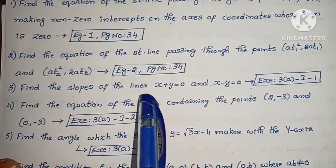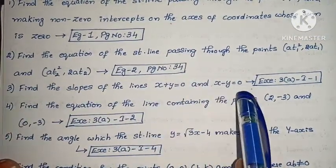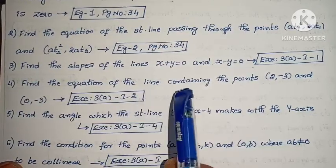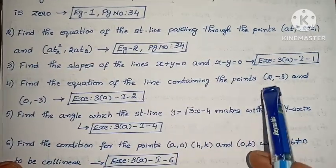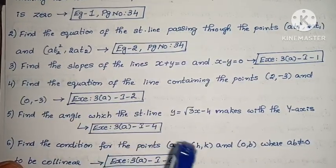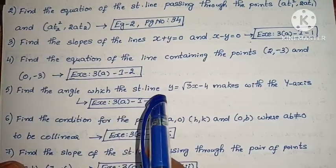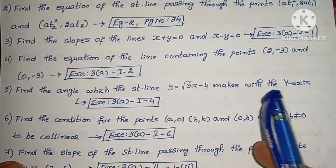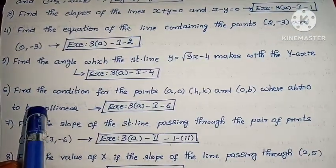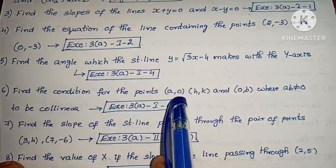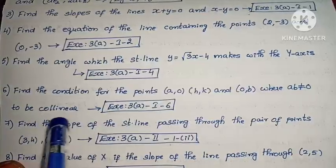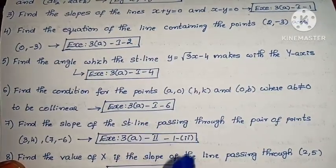Next, find the slopes of the lines x plus y equals to 0 and x minus y equals to 0. Next, find the equation of the line containing the points (2, -3) and (0, -3). Next, find the angle which the straight line y equals to root 3x minus 4 makes with the Y axis. Next, find the condition for the points (a, 0), (h, k) and (0, b) where AB not equals to 0 to be collinear.